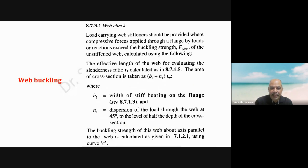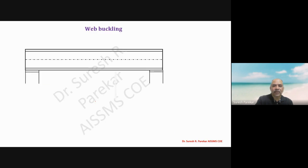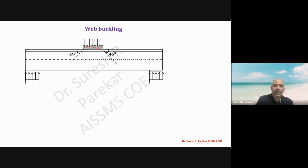Two things to keep in mind: the angle of dispersion is 45 degrees, and we have to go to the level of half the depth of the cross-section — so we find this value at the center of the cross-section. For web buckling, the bearing length b1 is shown. A concentrated load cannot be put at a point; it is applied over a small length, and dispersion is at 45 degrees. This applies for both intermediate loads and reactions, since reaction is also a concentrated load.